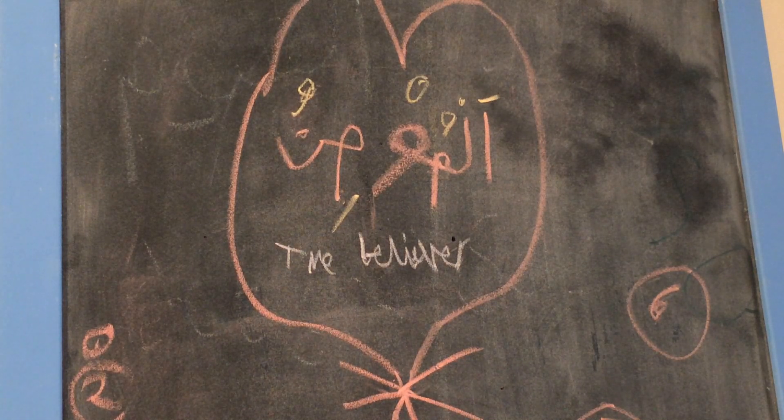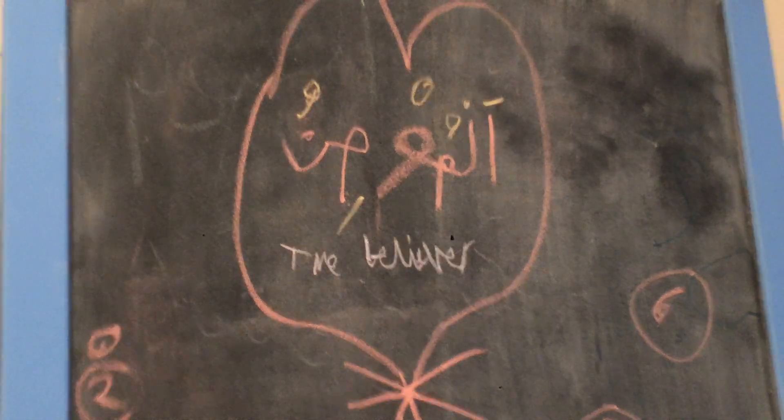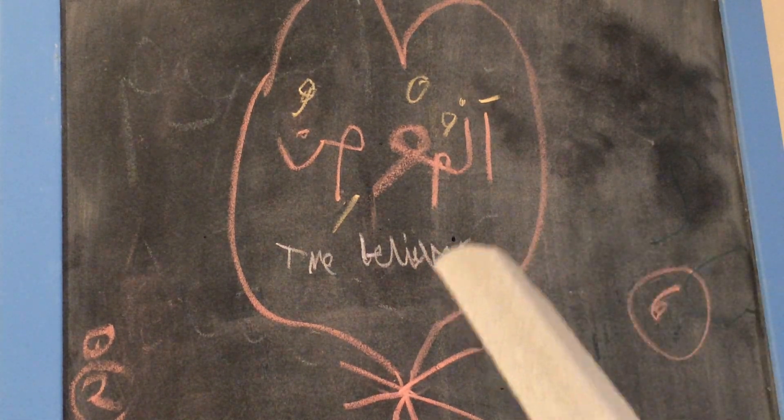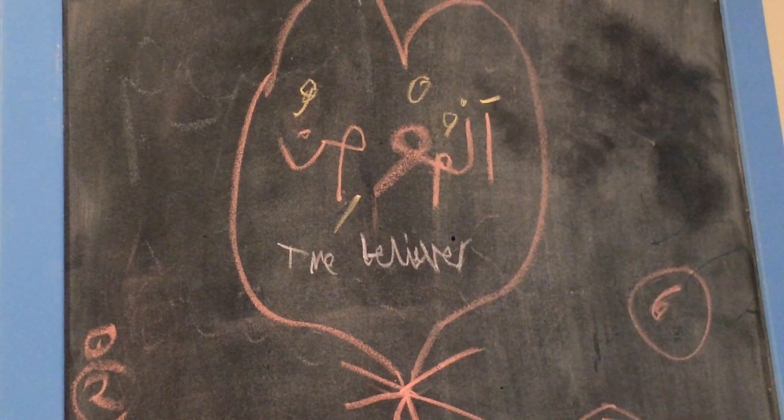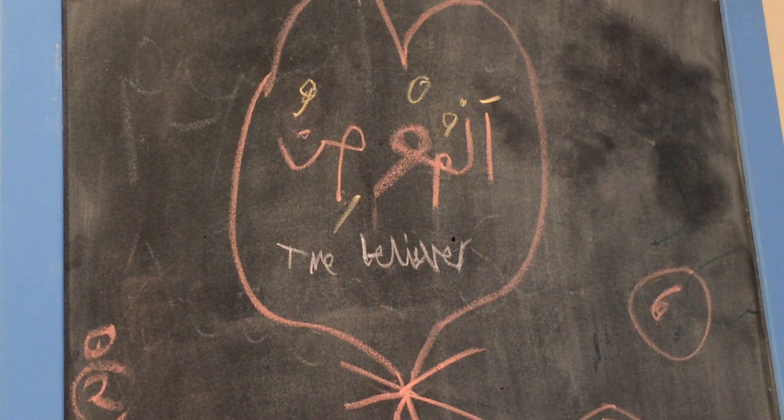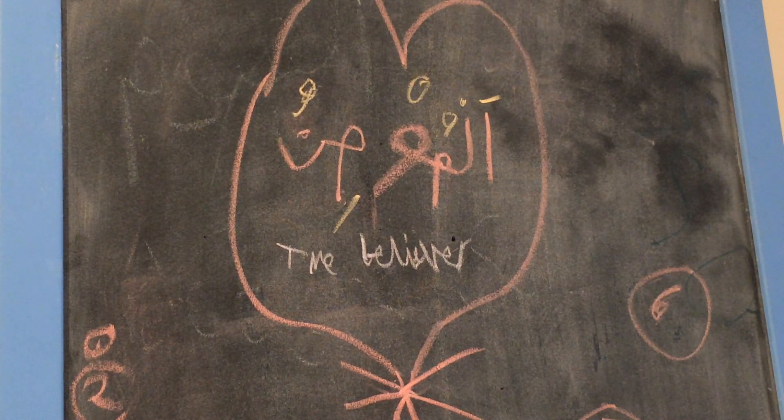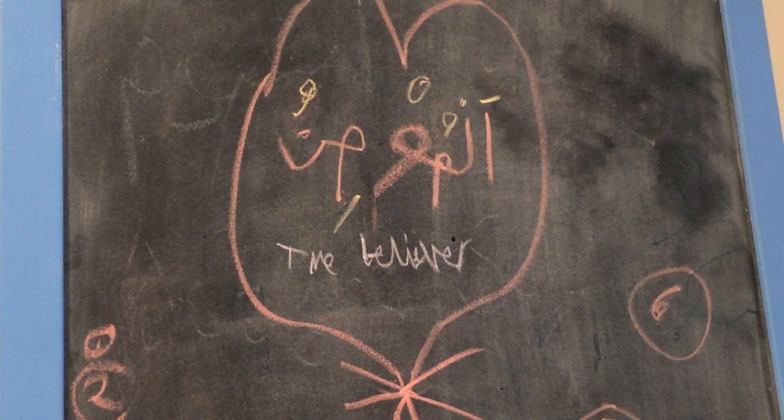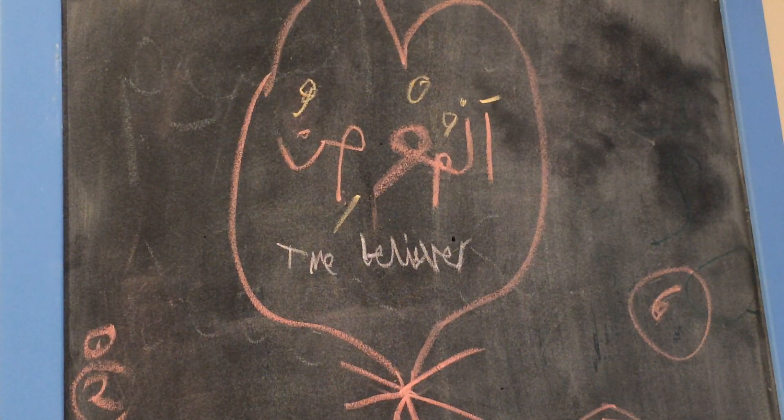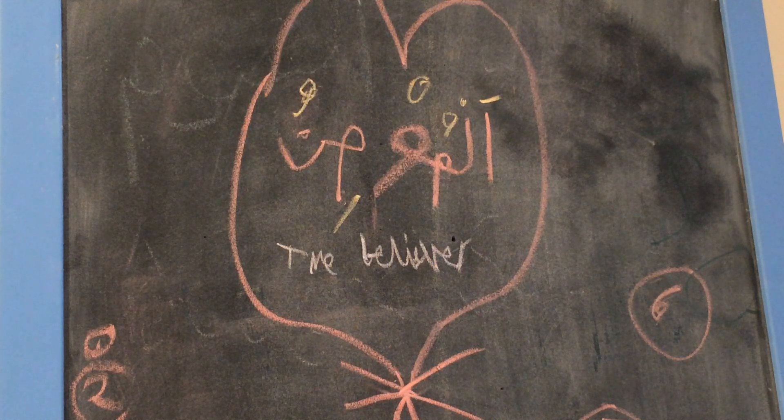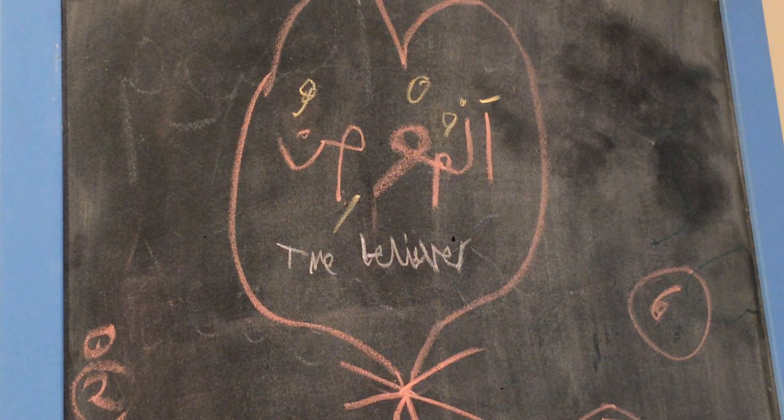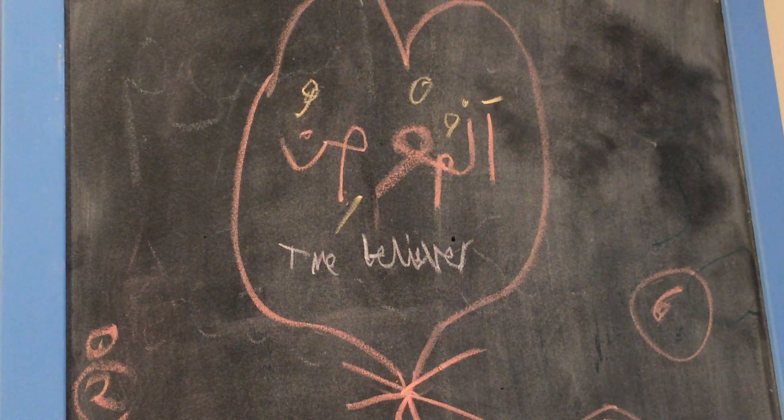Al-Mu'min. Al-Mu'min. And what does Al-Mu'min mean? What does Al-Mu'min mean? The believer. The believer. So Allah's the believer? What does that mean? I thought we're supposed to be the believers. Allah is Al-Mu'min. Allah says this in the Qur'an in many different places. What does it mean that Allah is the believer?